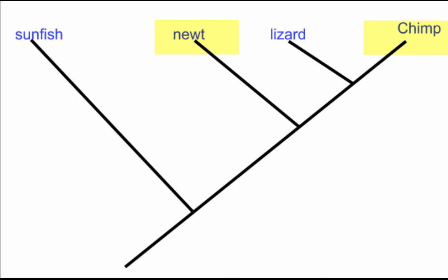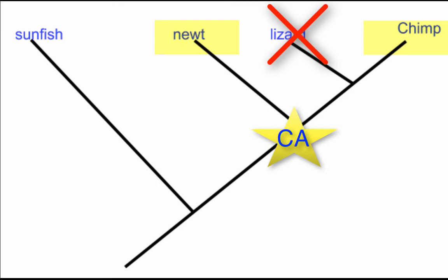But for example, chimp and newt would not be considered monophyletic. You find the most recent common ancestor between newt and chimp, go back in time, and then look for all the descendants of that common ancestor. Did I leave any descendants off? Yes — lizard is also a descendant of the common ancestor shared between newt and chimp, and therefore newt and chimp alone cannot be considered a monophyletic group.